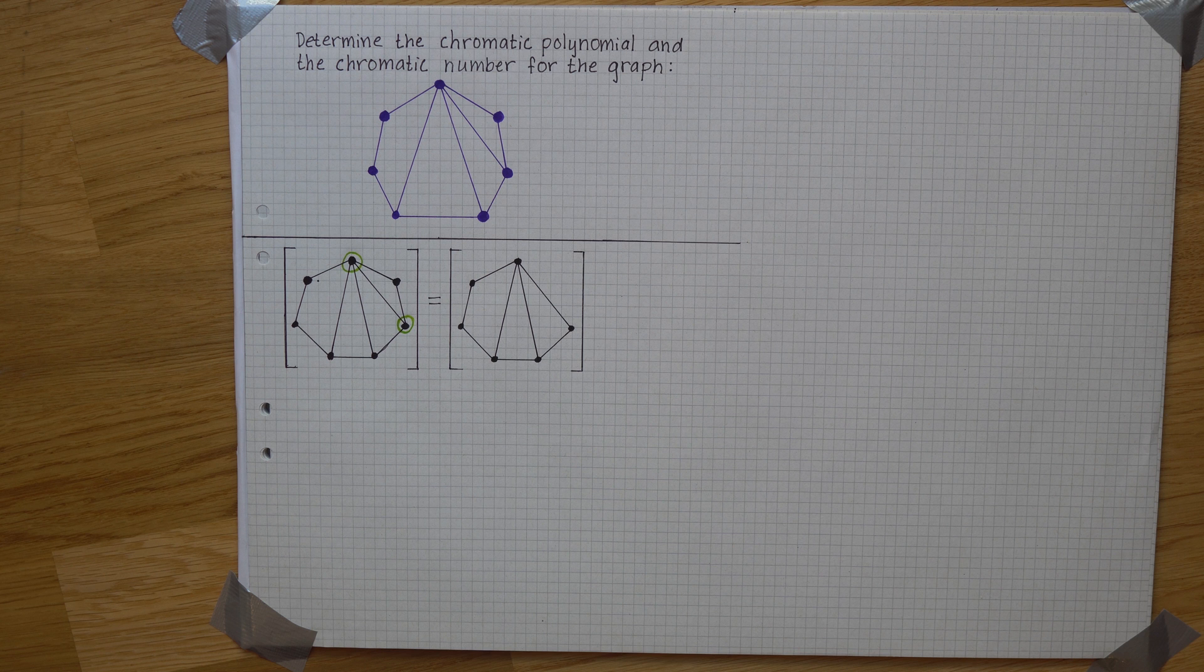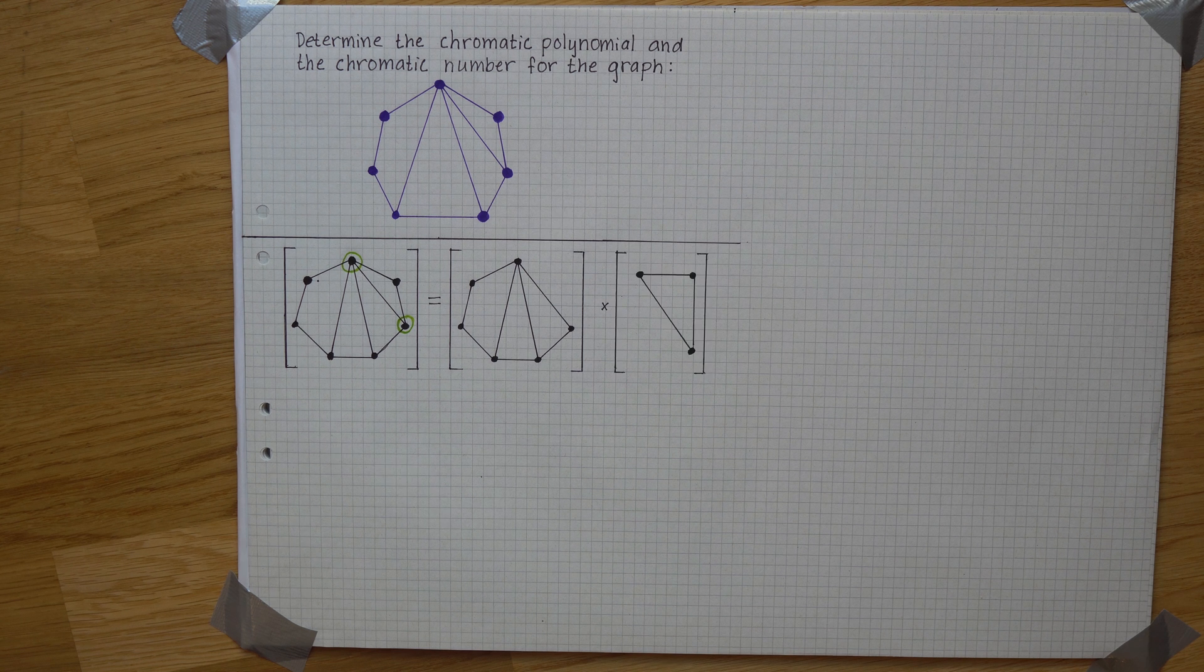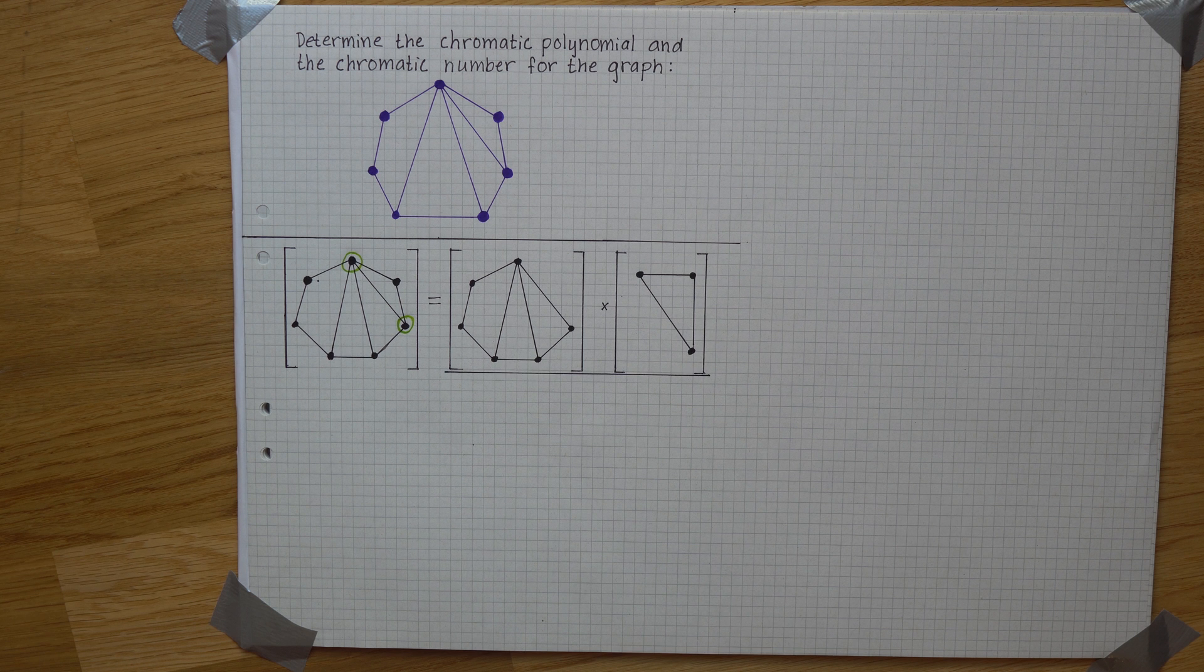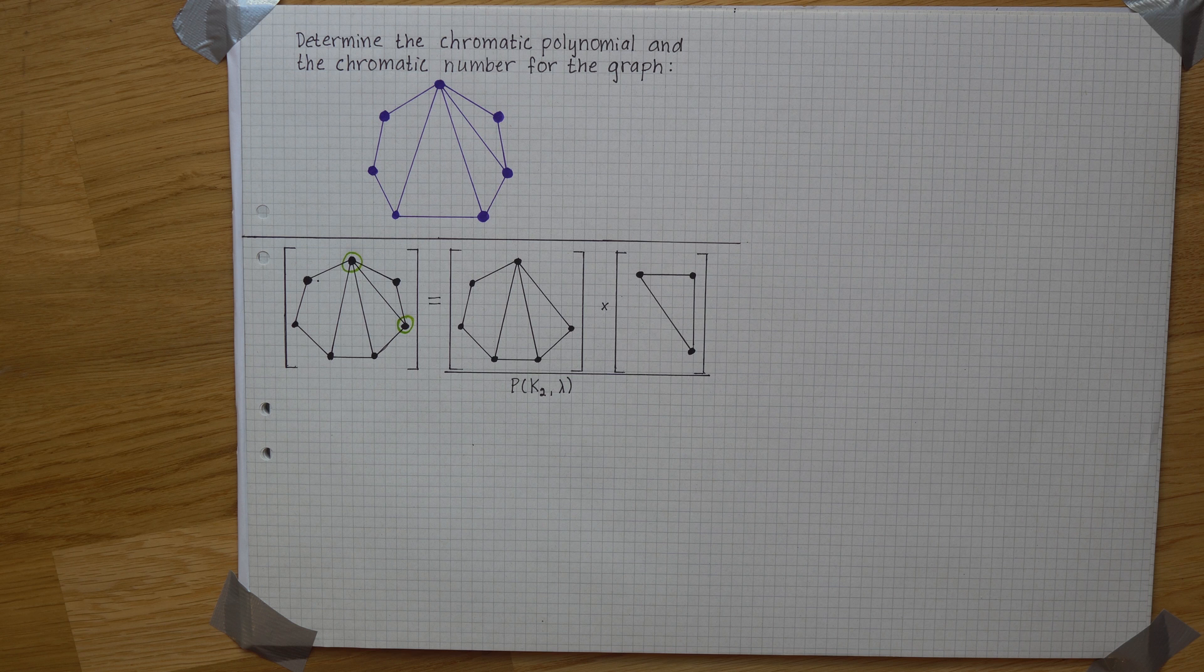You can do that if you then multiply the reduced graph with the bit that you just took off, and then divide it all with p out of k2 and lambda, where this 2 represents that it was separated in two points.